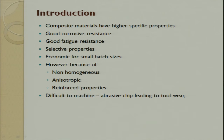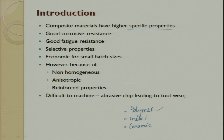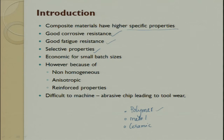Composite materials have very high specific properties. Among the three types — polymer, metal, and ceramic matrix — polymer matrix plays a major role due to its predominant presence today. Polymer matrix composites have good corrosion resistance, good fatigue resistance, can be made anisotropic, and are economical for small batch quantities.